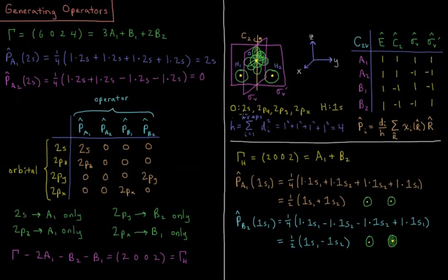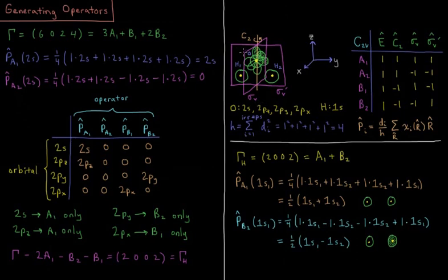In the previous video we were looking at the water molecule, which is in the C2V point group. There are four symmetry operations: E, C2, sigma V, and sigma V prime, where the principal C2 axis is the Z axis, sigma V bisects the molecule in the XZ plane, and sigma V prime is the molecular plane, the YZ plane.